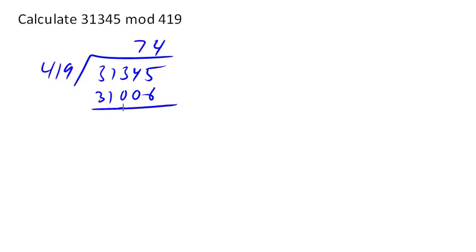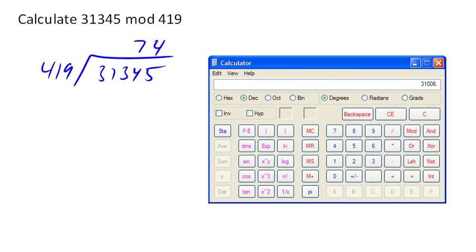If we go back and we find our 31345 divided by 419 here, let me try that again. 31345 divided by 419 is 74.89. So what we really want is the remainder part. So let's go ahead and subtract 74 equals. And that gives me the 0.89.